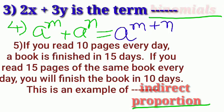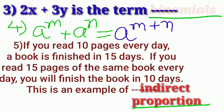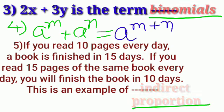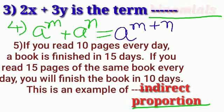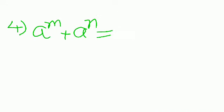5th, if you read 10 pages every day, a book is finished in 15 days. If you read 15 pages of the same book every day, you will finish the book in 10 days. This is the example of indirect proportion. Underline all fill in the blanks with proper pen.